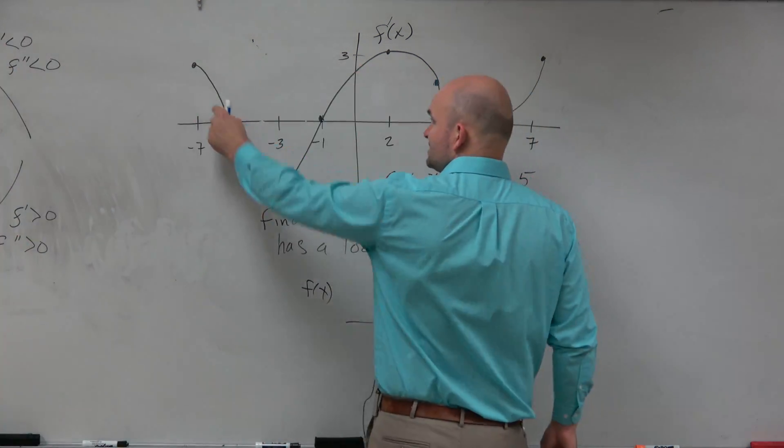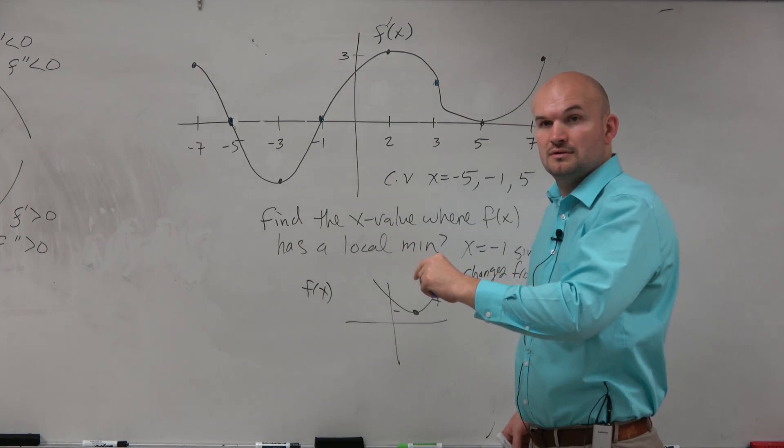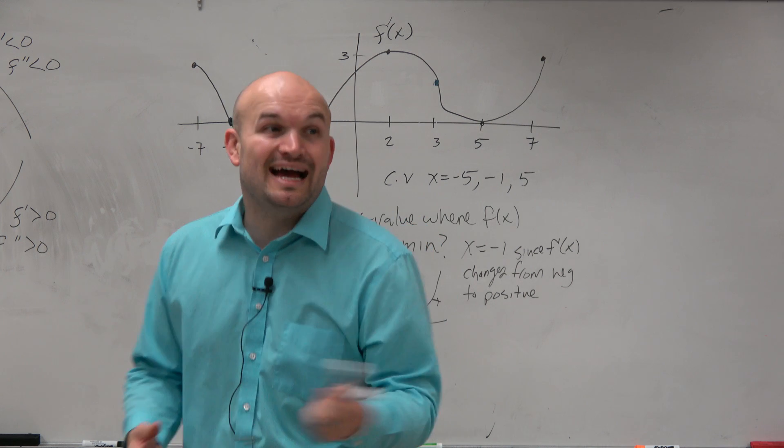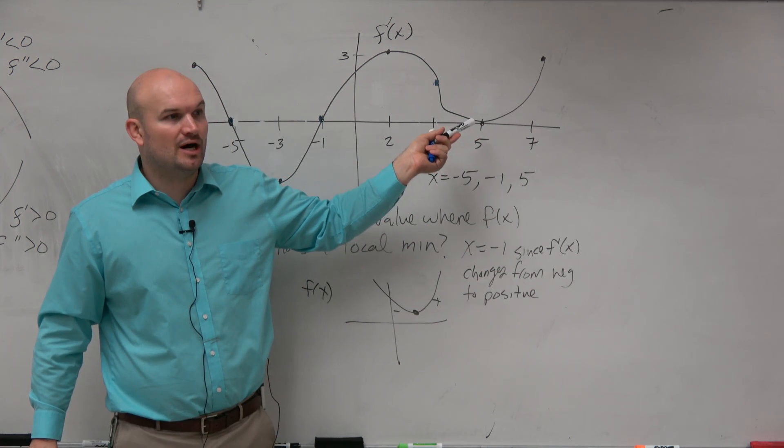At negative 5, it changes from positive to negative. Right, because it's a minimum we're looking for. If we were asking for maximum, then that would be the answer. And what about at 5? Is that a relative extreme at all?